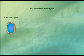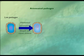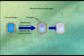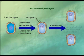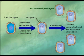Another traditional approach is to use a weakened or attenuated strain of the pathogen. The attenuated pathogen normally cannot cause disease, but it can still multiply. This provides more antigens, boosting the immune response.